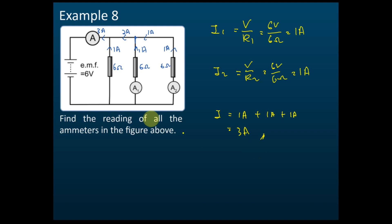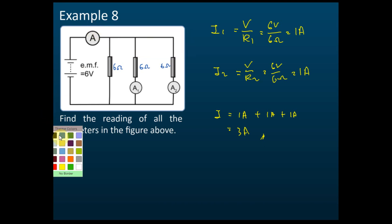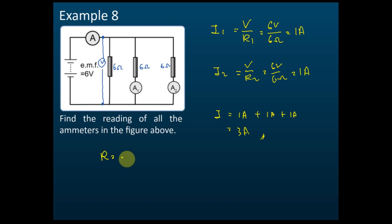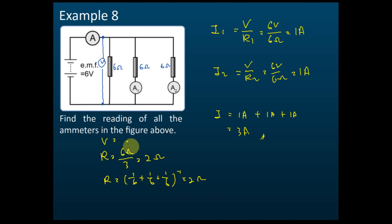If you don't like this method, you can use another one. Choose these two points for your V, so V equals 6 volts. For these two points, the effective resistance: this is a parallel circuit — R equals 6 ohm divided by 3, which equals 2 ohms. Or you can use 1 over 6 plus 1 over 6 plus 1 over 6 — reciprocal — you still get 2 ohms. Therefore, the current I equals 6 divided by 2, which equals 3 amperes.